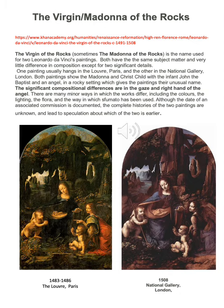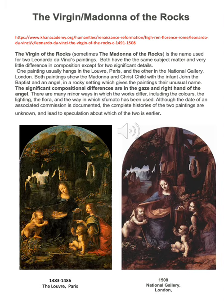The first two paintings of Leonardo da Vinci that we are going to look at are almost identical. Both have the same subject matter and the same name: the Virgin of the Rocks, sometimes known as the Madonna of the Rocks. Please watch the Khan Academy video linked at the top of the page — it gives a good explanation as to why we think Leonardo da Vinci painted almost exactly the same subject matter, composition, and general paintings twice. The Virgin of the Rocks is the name used for both paintings, with very little difference in composition except for a couple of significant details.